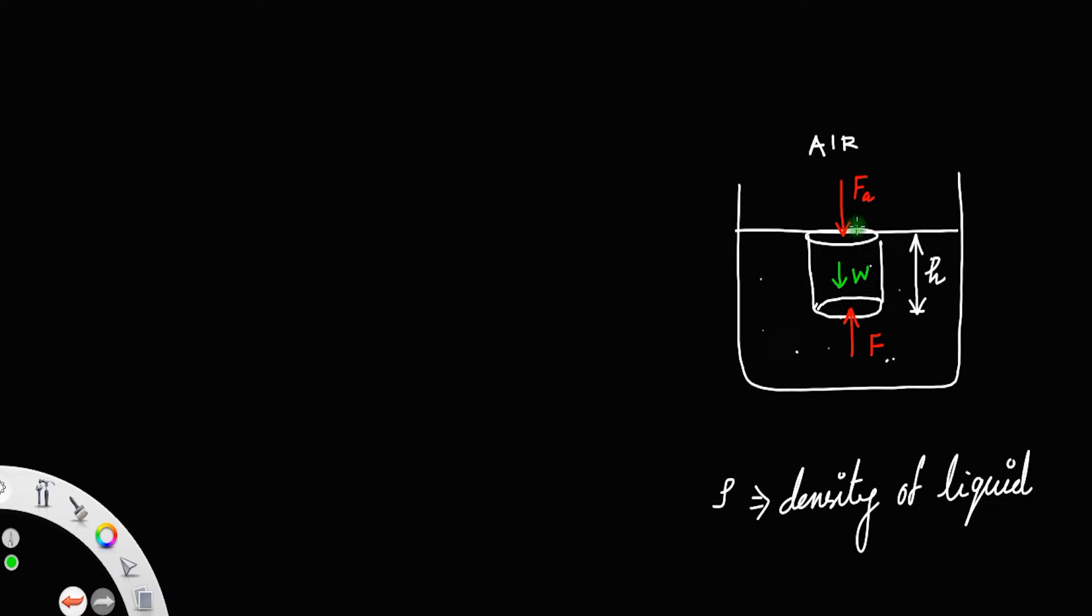Suppose we take the liquid column as a cylinder of cross-sectional area A, where A is the area of cross section of the cylinder.